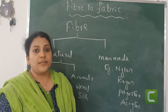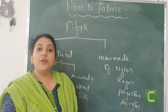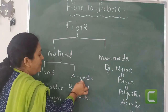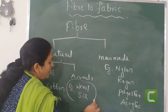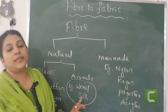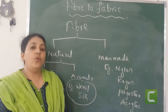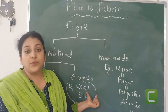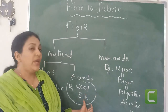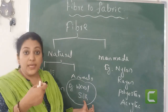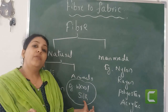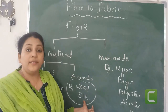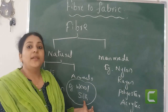So in class 7, we are going to study about animal fibers, that are wool and silk — how we can obtain wool and how can we knit that into a fabric, and how can we obtain silk threads and how can we knit that into a silk cloth. That is what we are going to study in detail in this chapter.